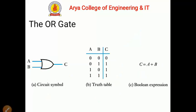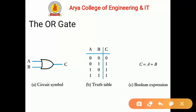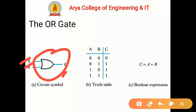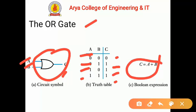Next is the OR gate. Similar to before, we are talking about a two-input logic gate. There are two inputs A and B and the output is C. The symbol is represented in the diagram. From the truth table: if both inputs are 0 then the output will be 0; if any input is high then the output will be high. The Boolean expression for the OR gate is C equals A plus B — a sum of two variables.